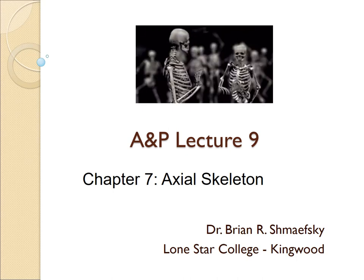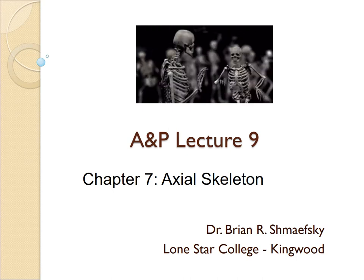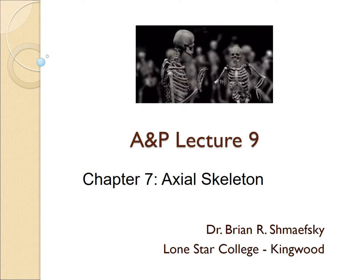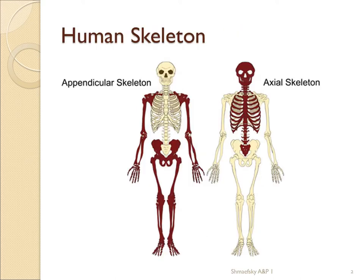Welcome to Lecture 9, which covers Chapter 7 on the axial skeleton. We're going to break the skeleton down into two regions. The axial skeleton covers only the skull, the ribcage, and the vertebral column.